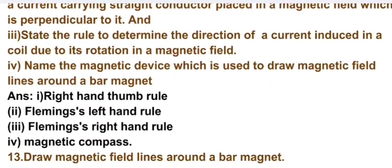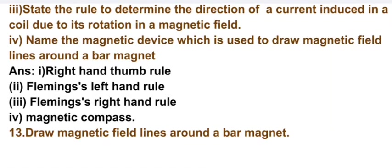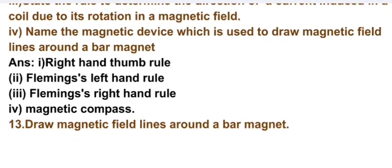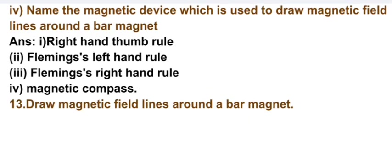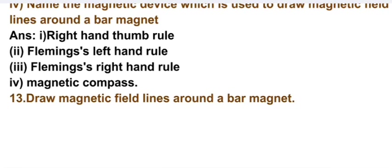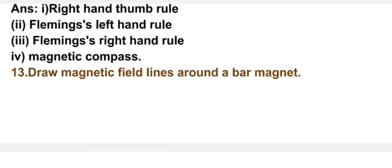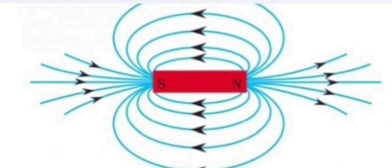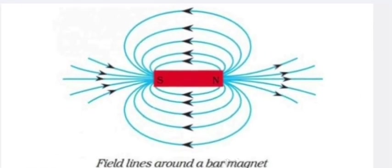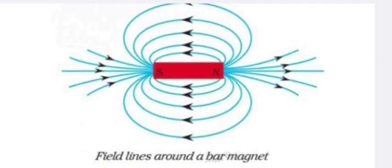Name the magnetic device which is used to draw magnetic field lines around a bar magnet. Answers: right hand thumb rule, number two Fleming's left hand rule, number three Fleming's right hand rule, number four magnetic compass. Draw magnetic field lines around a bar magnet. This is the diagram: field lines around a bar magnet.